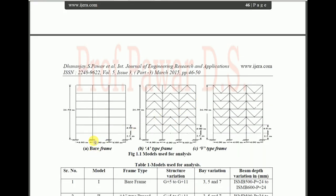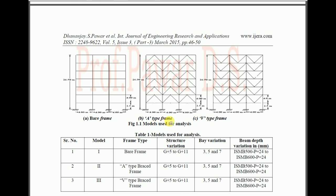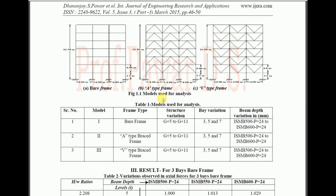For the problem definition, we first considered the bare frame — a plane frame with no bracing system. We then considered an A-type frame, where the bracing provided indicates the shape 'A', and similarly a V-type frame, where the bracing system indicates the shape 'V'.